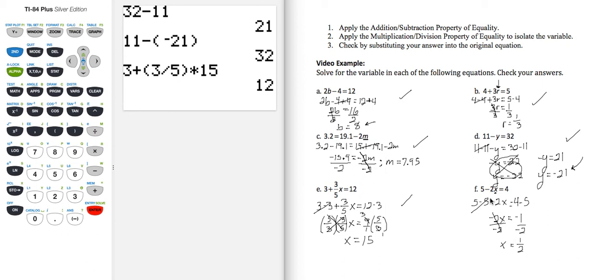Now I'm going to check. I'm going to plug in 1/2 for X. 5 minus 2, parentheses, 1/2, and that result should equal 4, and it does. So this checks, meaning that X equals 1/2 is our final solution.